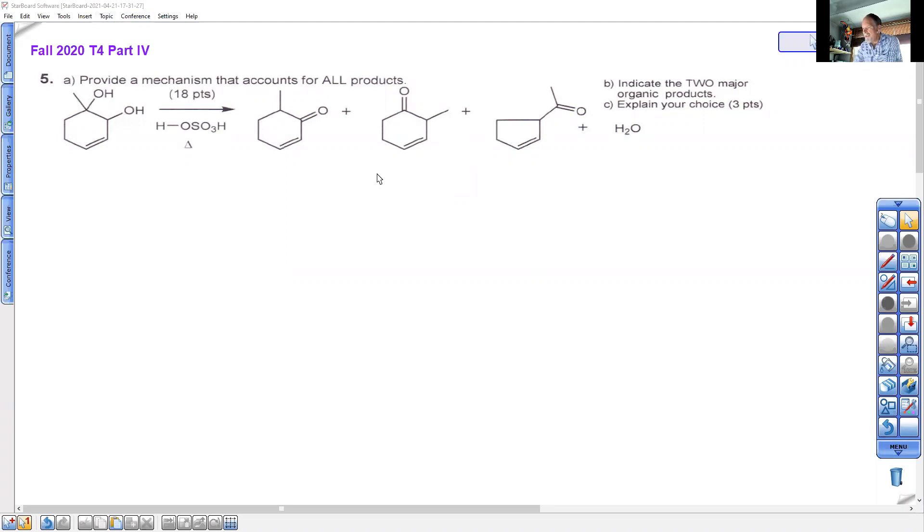You've got to entertain the idea that some of the products will come from dehydrating this OH, and some of the products will come from dehydrating the other OH. So you're going to need to protonate each one separately. So I'm just going to redraw that molecule so I can show the protonation of each alcohol separately. In the top one, I will protonate the top alcohol.